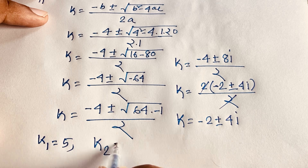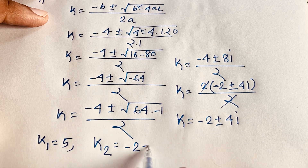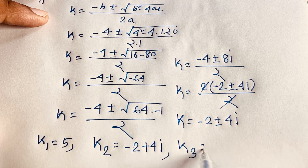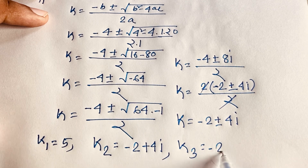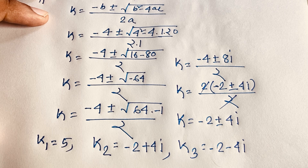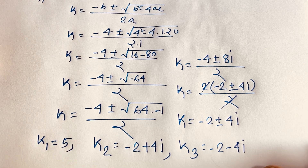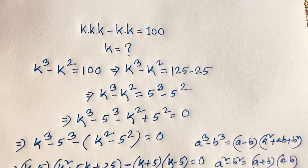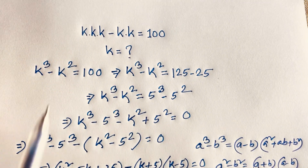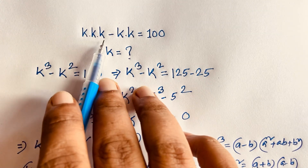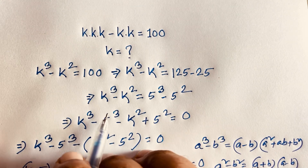Our final answers are: k₁ = 5, k₂ = -2 + 4i, and k₃ = -2 - 4i.